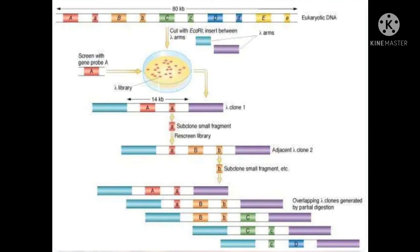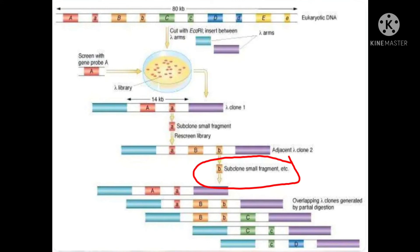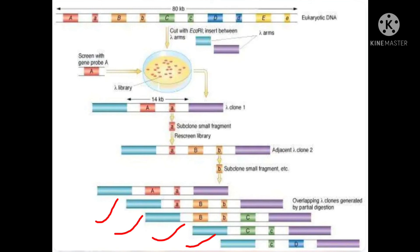Once we isolate this gene, we sequence it again. Once we know the sequence information about the small a gene, we design another primer to amplify the rest of the portion and clone it using vectors. Similarly, we sequence the next gene, capital B. We continue this process until we reach a particular gene on the chromosome. By using this method it is possible to sequence the gene and determine its position, which is the physical mapping of the genome. This is all about chromosomal walking.